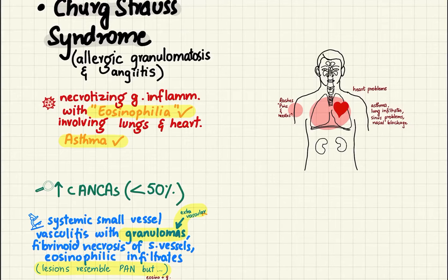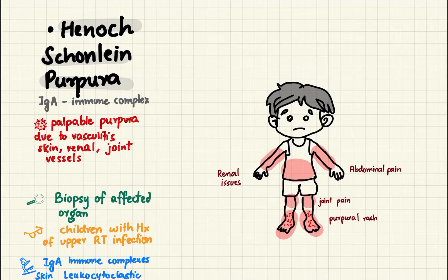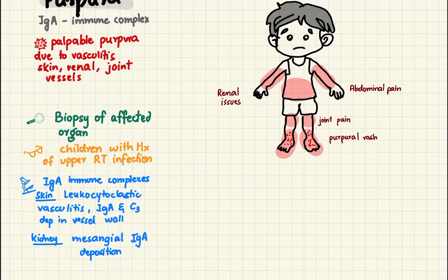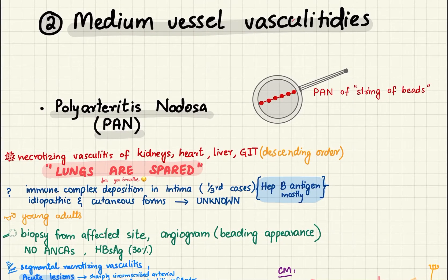Lastly among small vessel vasculitides, we have Henoch-Schönlein Purpura, which is not ANCA-mediated. It is an IgA immune complex-mediated disease with palpable purpuras and skin, renal, and joint problems. It is chiefly a disease of children — remember the image of a child for this condition.